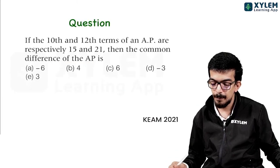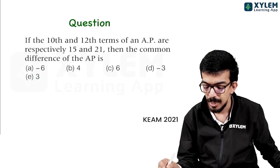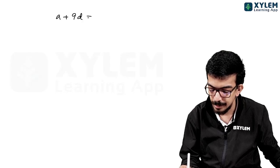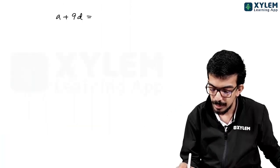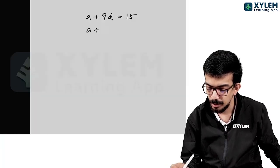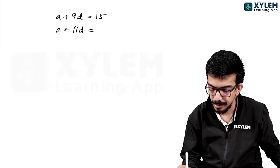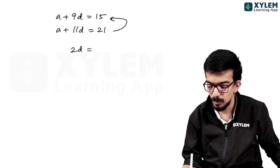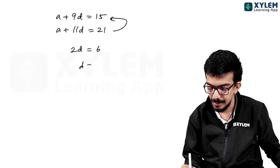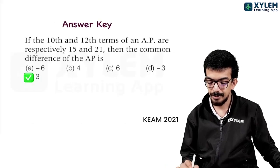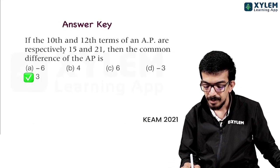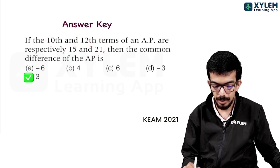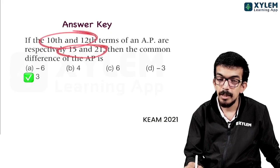Next question. The 10th and 12th terms of an AP are respectively 15 and 21. Then the common difference of the AP. We have a + 9d = 15 and a + 11d = 21. Subtracting, 2d is equal to 6, so d is equal to 3. The common difference is 3.